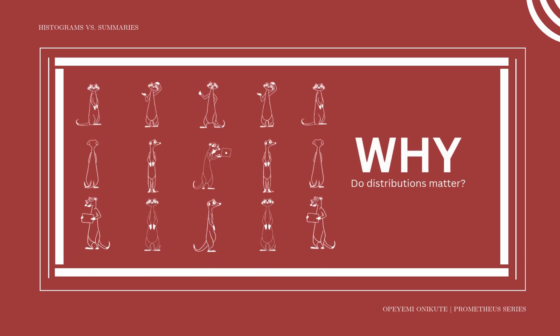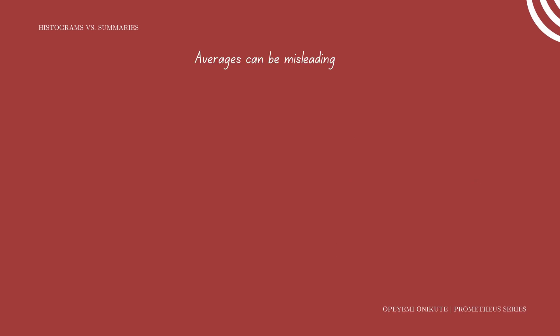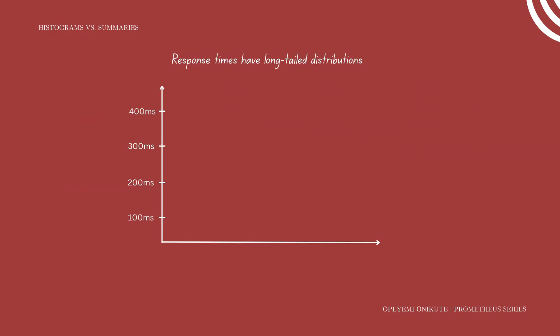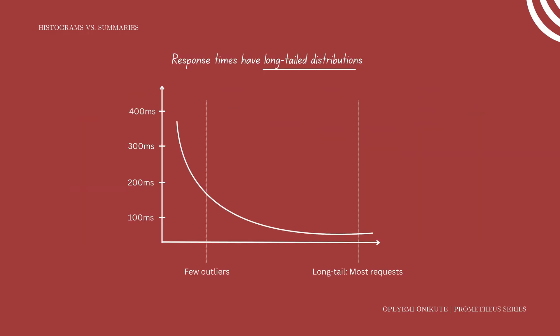But why do distributions even matter? When creating an alert, you could easily track the average response time, but this can be misleading because a few very slow or very fast values can skew the average. If nine people earn $100 and one person earns $1,000, the average salary becomes $190, even though nine out of ten people only earn $100. Application response times behave the same way — they usually have long tail distributions where most requests are fast, but a few outliers are extremely slow.